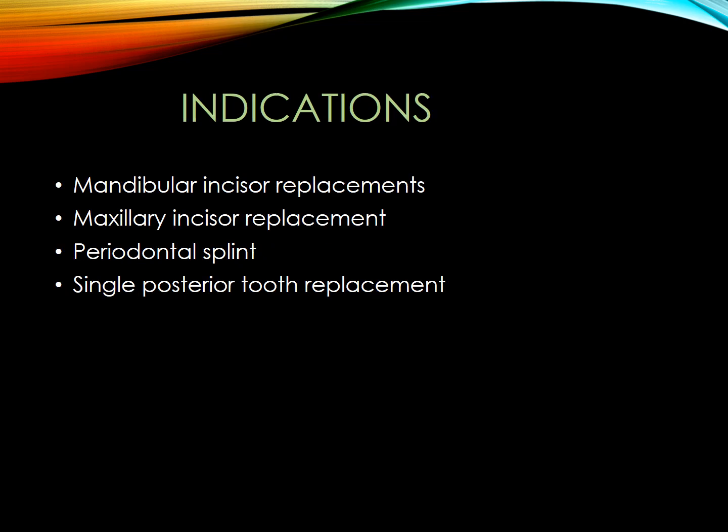Now, what are the indications? The cases where we can use a resin-bonded bridge: first, mandibular incisor replacement — the most common indication is when we have one or two missing mandibular incisors and the abutments are undamaged and intact. So we can do it with the lower incisor teeth. Second: maxillary incisor replacement.